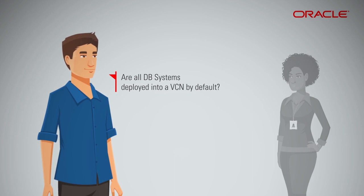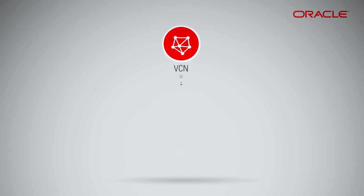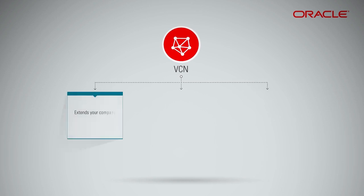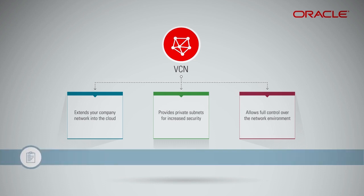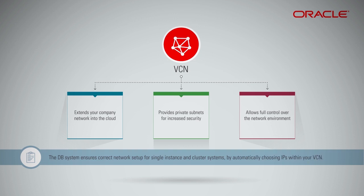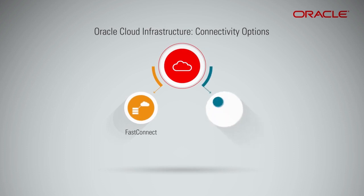Are all DB systems deployed into a VCN by default? Yes. All DB systems will be deployed in a VCN with platform security lists to isolate your database instances, and you can easily extend your company subnet in the cloud. The VCN provides private subnets for increased security and allows full control over the network environment, like firewalls, subnets, and route tables. The DB system ensures correct network setup for single instance and cluster systems by automatically choosing IPs within your VCN. Additionally, Oracle Cloud Infrastructure offers FastConnect and highly available VPN that allow fast hybrid connectivity.